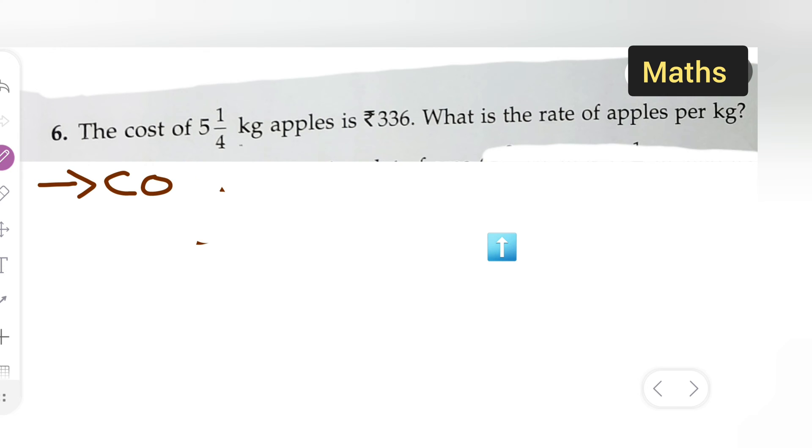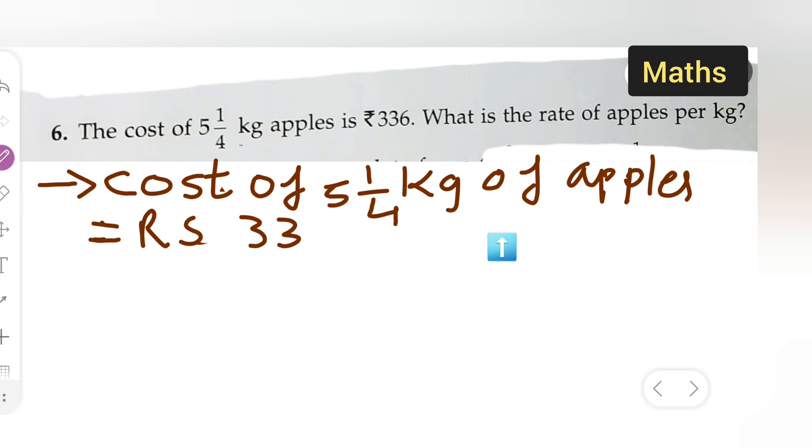First, you'll write the cost: the cost of 5 and 1 upon 4 kg of apples is equal to rupees 336. This I have written from the question, the cost of 5 and 1 upon 4 kg apples, this is mixed fraction, is rupees 336.